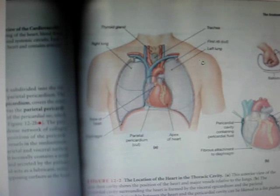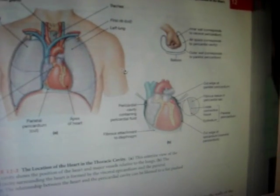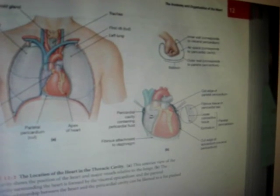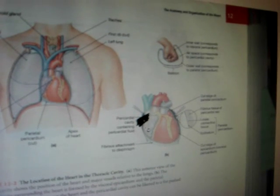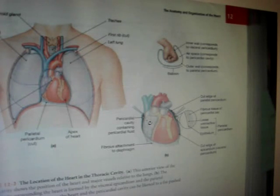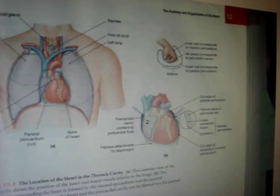Now let's break this up even more. There's parietal pericardium and visceral pericardium. Parietal is on the outside while visceral is on the inside — it's also referred to as the epicardium. If you look at that diagram, you can see that tiny space around there — that's the pericardial cavity. So the outside part is the parietal pericardium, and the inner layer close to the myocardium, the muscle of the heart, is the visceral.